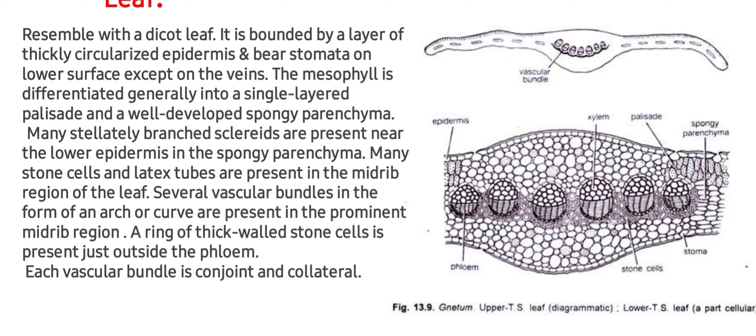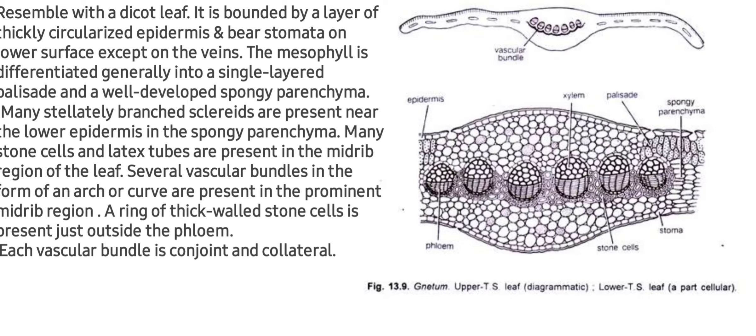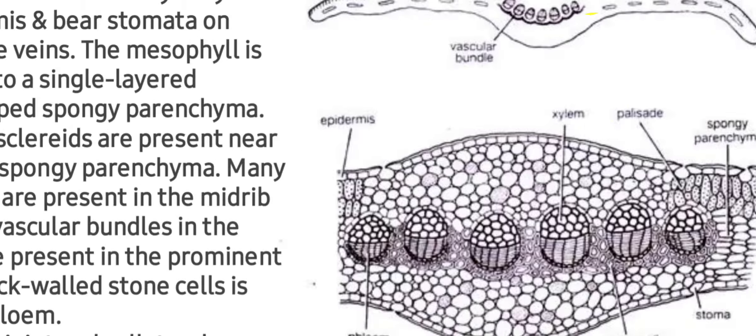The anatomy of the leaf also resembles a dicot leaf. It is bounded by a layer of thickly cuticularized epidermis and bears stomata on the lower surface on the whole lower surface except on the veins. The mesophyll is differentiated into a single-layered palisade and well-developed spongy parenchyma. Many stellately branched sclereids are present near the lower epidermis in the spongy parenchyma. Many stone cells and latex tubes are also present. Several vascular bundles in the form of an arc or curve are present in the prominent midrib region, and these are conjoint and collateral.